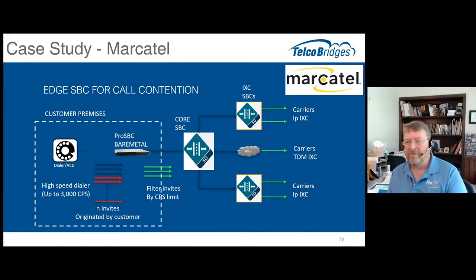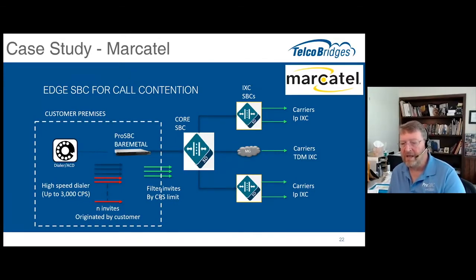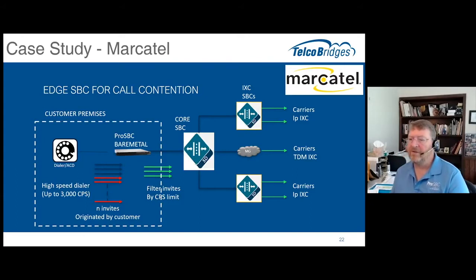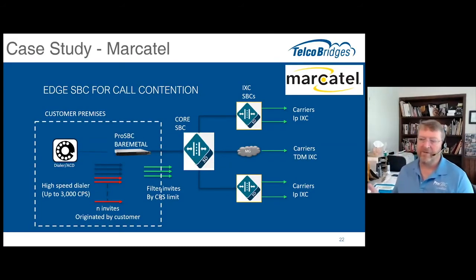These dialers were violating their SLA by flooding the core of the network with calls on payday. A customer might be a collection agency or a retail outlet running a promotion, and the dialer would go crazy — hitting some 3,000 calls per second, which would just flood the core of their network and they couldn't handle it. So instead of spending a lot of money to significantly upgrade the core of their network, they decided to put ProSBC on a bare metal server out at the customer.